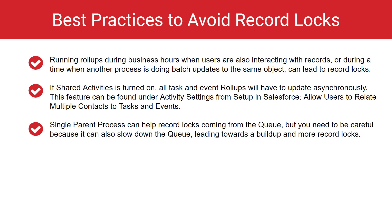If shared activities is turned on, all task and event roll-ups will have to update asynchronously. This feature can be found under activity settings in Salesforce setup — 'allow users to relate multiple contacts to tasks and events.' Single parent process can help with record locks coming from the queue, but you need to be careful because it can also slow down the queue, leading to buildup and more record locks.